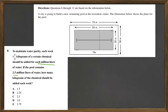If the pool contains 2.5 million liters of water, how many kilograms of the chemical should be added each week? There are a couple of different ways to solve this. We could use fractions and then just do a chart. So let's do that.